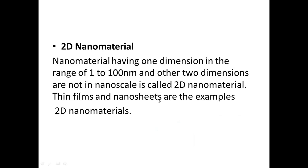Next is two-dimensional nanomaterials. These are nanomaterials where a minimum of one dimension is in the range of 1 to 100 nanometers, while the other two dimensions are not in the nanoscale. Examples include thin films and nanosheets.